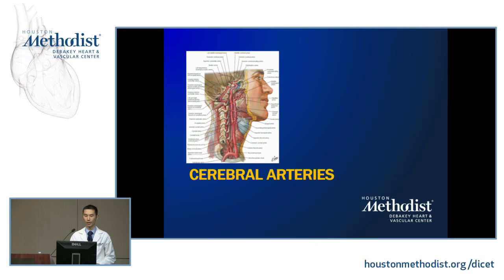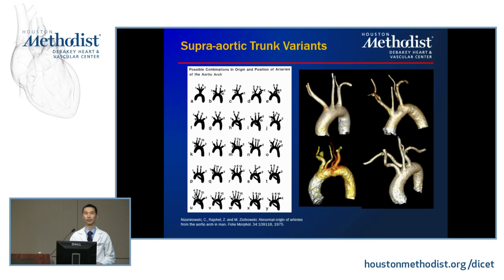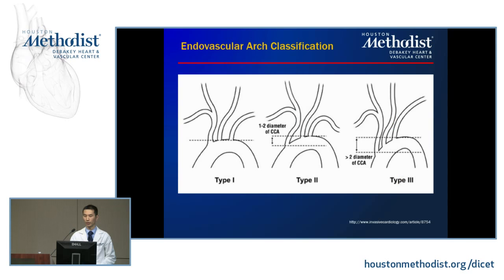Beginning with the cerebral arteries — no talk is complete without starting with the supraortic trunk, which consists of the arch vessels. In most patients that's the right innominate, left common carotid, and left subclavian, though anatomic variants exist and are very important for vascular planning. The type of aortic arch matters when trying to land an endovascular catheter, especially with type 2 and type 3 arches when trying to reach the right innominate and left common carotid.